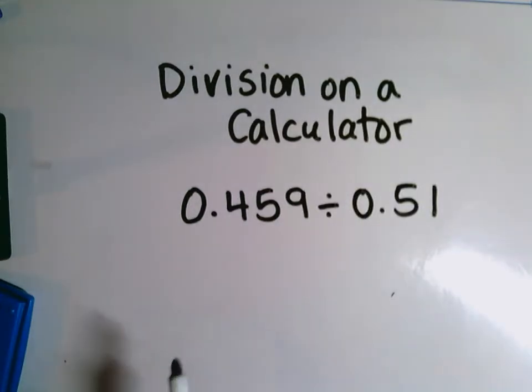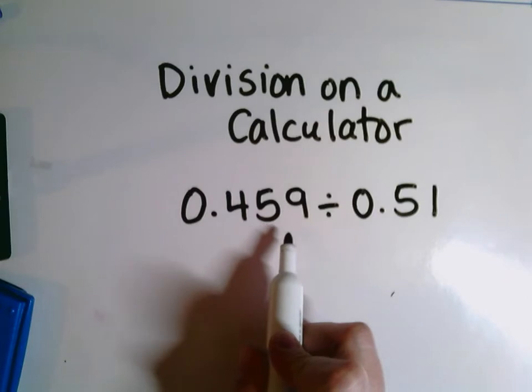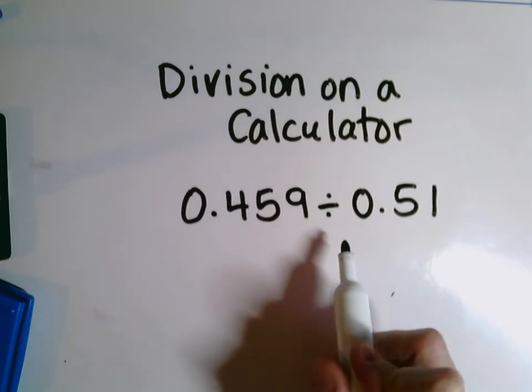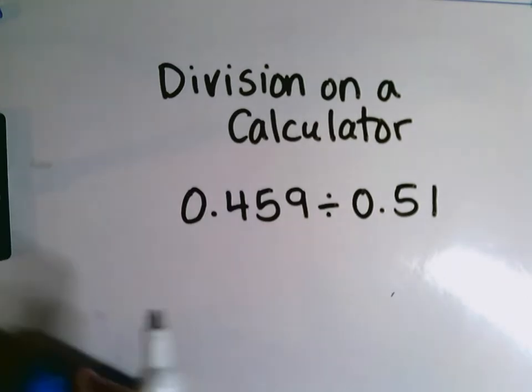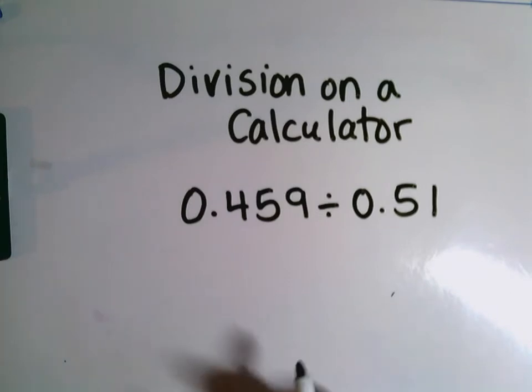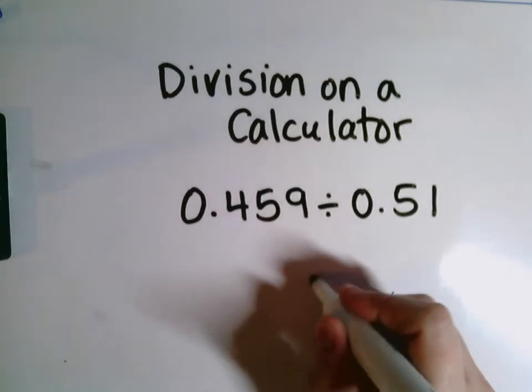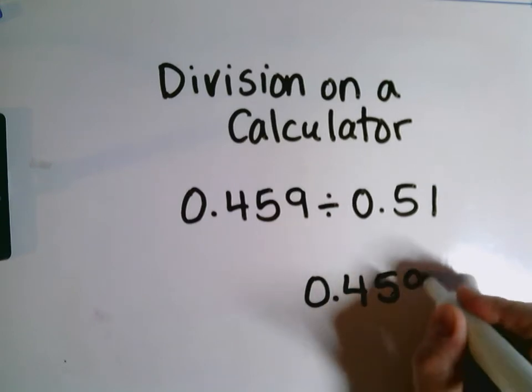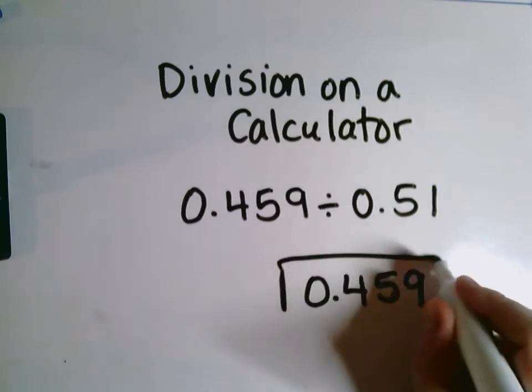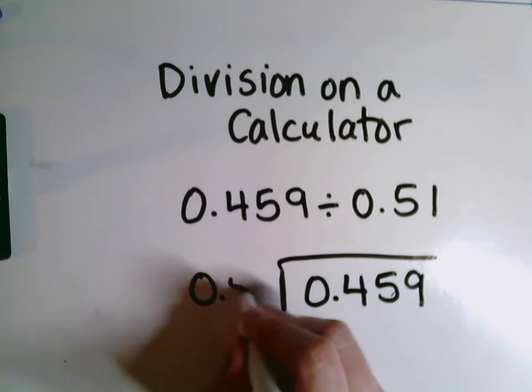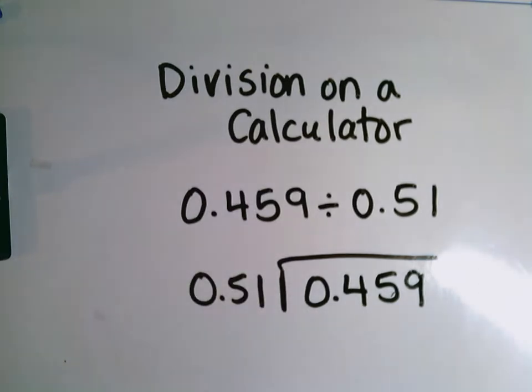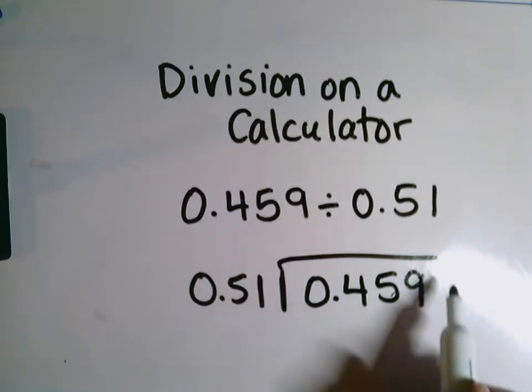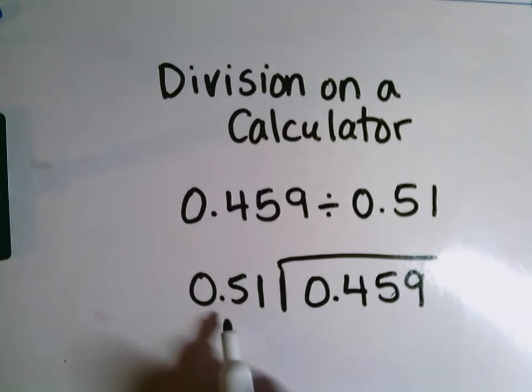So here I have the problem 459 thousandths divided by 51 hundredths. If I was going to do long division, I would have to write this out. It's 459 thousandths divided by 51 hundredths. The dividend goes inside the division box, the divisor goes on the outside of the division box.